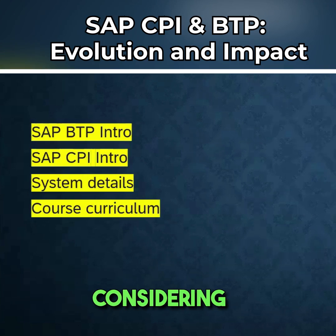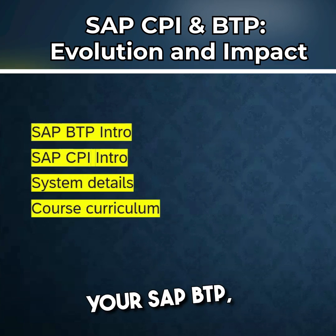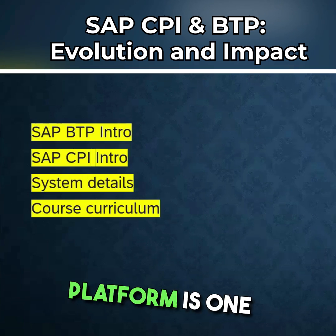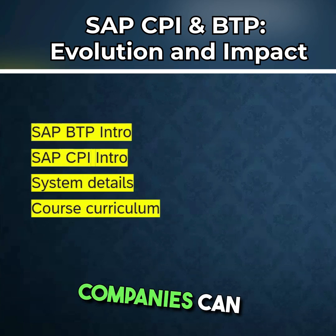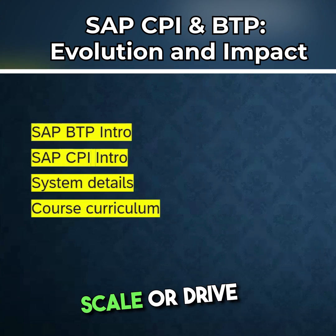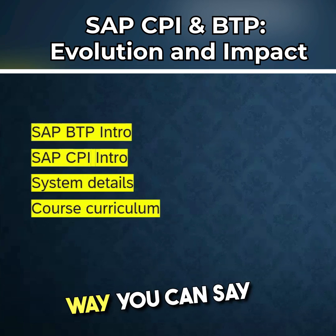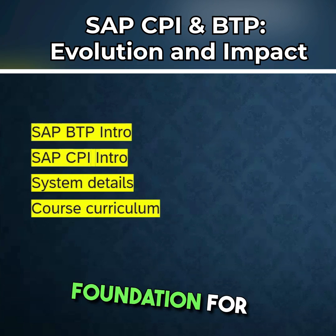Businesses need a technology platform that provides all the necessary services and products to make appropriate decisions, considering innovations and transformations. Your SAP BTP, or SAP Business Technology Platform, is one such platform with which companies can accelerate processes, innovate, scale, drive business agility, and also reduce costs. In another way, you can say that BTP provides the technical foundation for businesses.